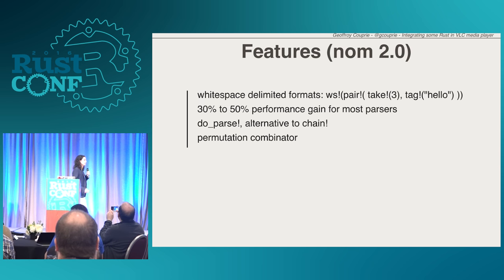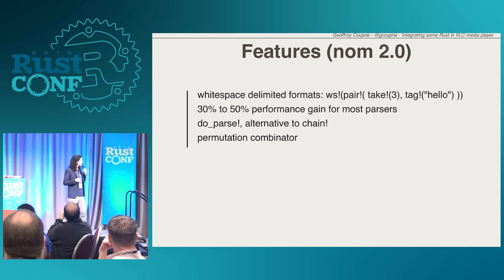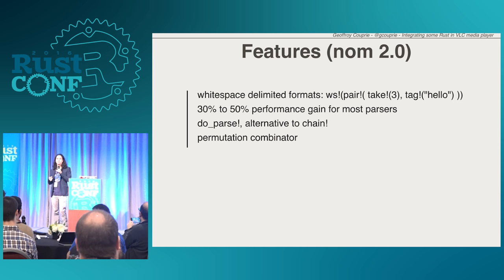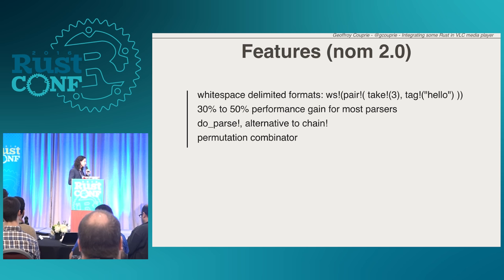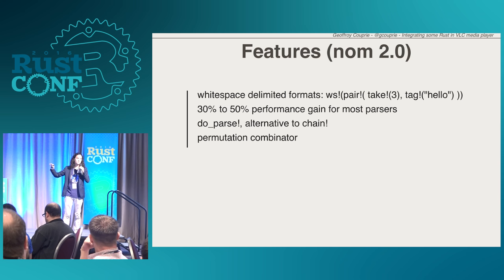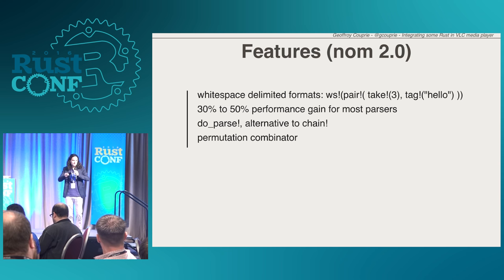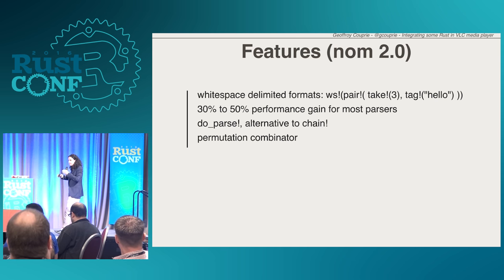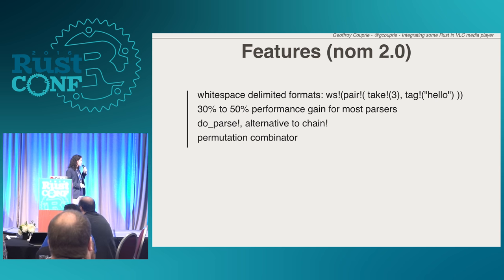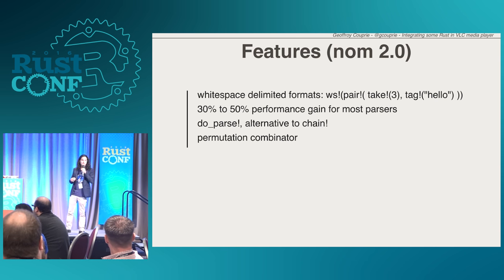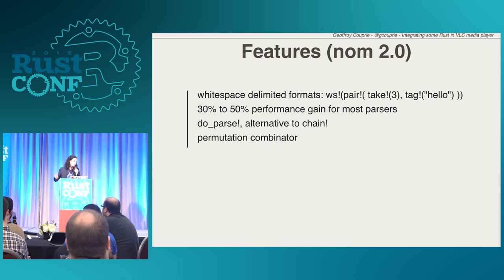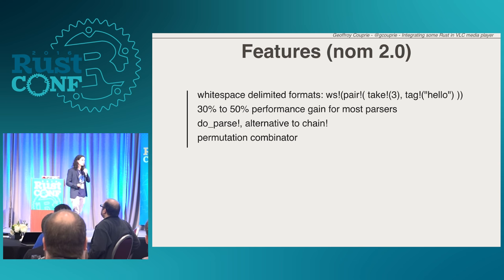And coming soon: NOM zero. There's a whitespace-delimited format combinator, which is implemented in the dumbest way you could think of — you apply the WS combinator on your parsing tree, and it will just intersperse space combinators everywhere inside the macros. It looks very ugly but it works really, really well. There are also performance gains coming soon, so it should be really, really nice to use.